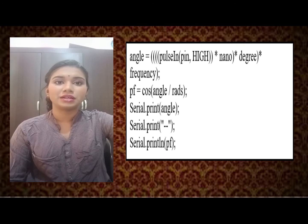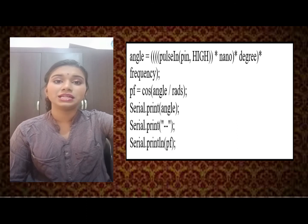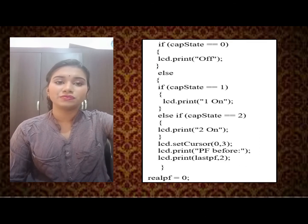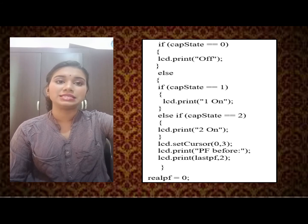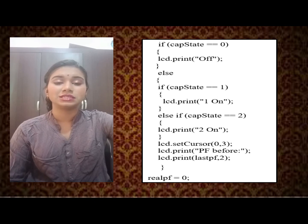The next part of the coding defines the calculation for the power factor. The phase angle between voltage and current is calculated in degrees; since the cosine function uses radians, the angle is divided by 57.2958. If no correction is needed, the LCD displays 'Capacitor Off.' If the power factor is less than 0.85, the LCD displays 'Capacitor 1 On,' activating one capacitor. If the power factor is below 0.5, two capacitors are activated and the LCD displays 'Capacitor 2 On.'